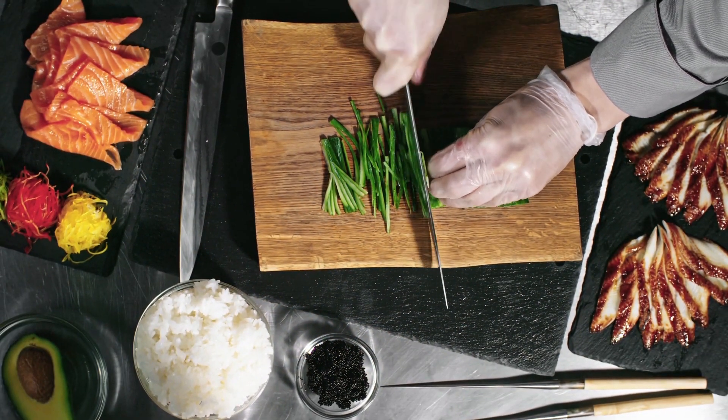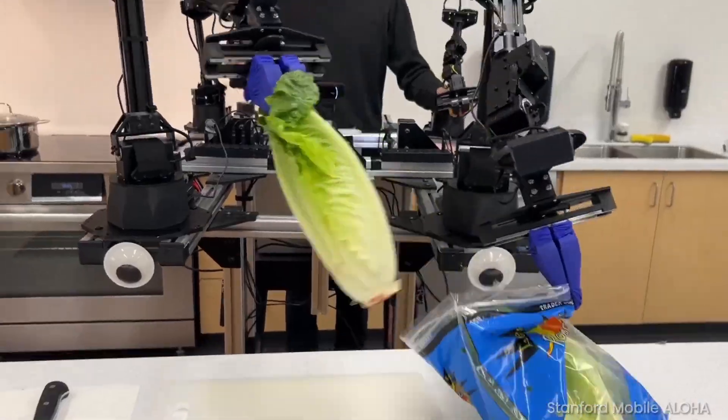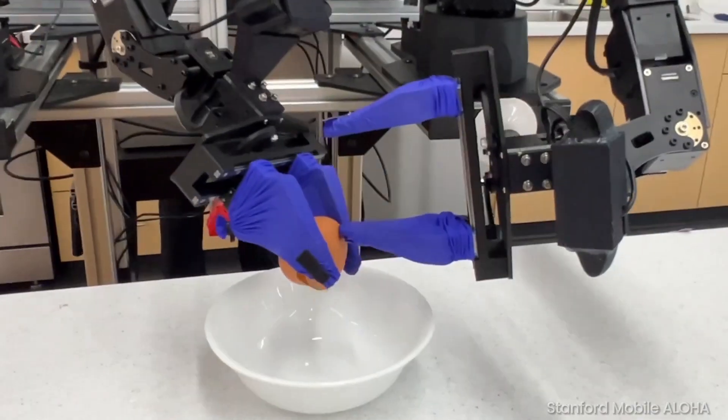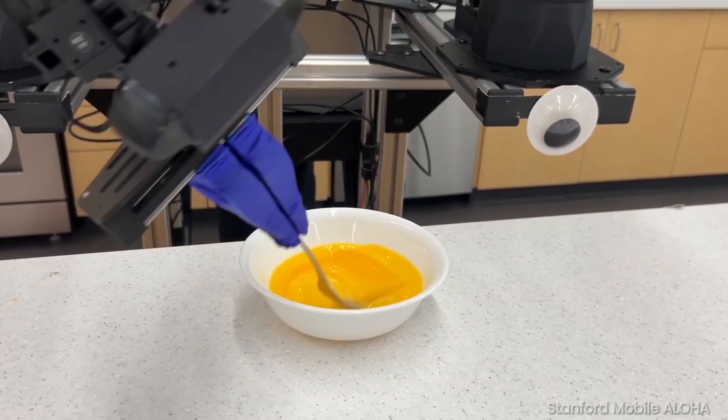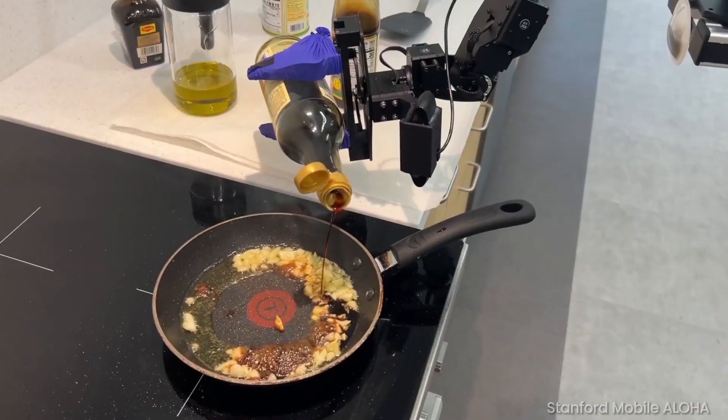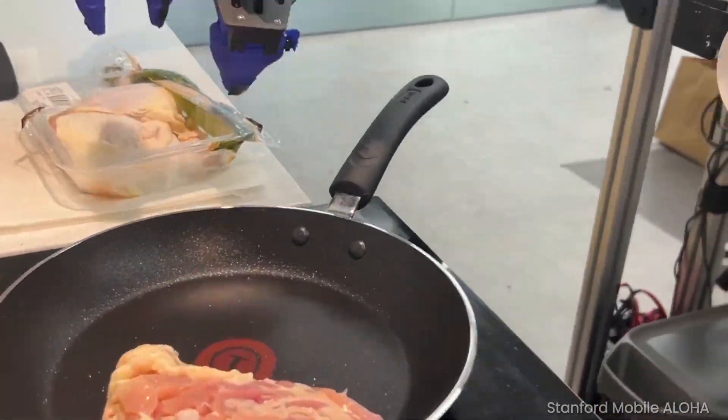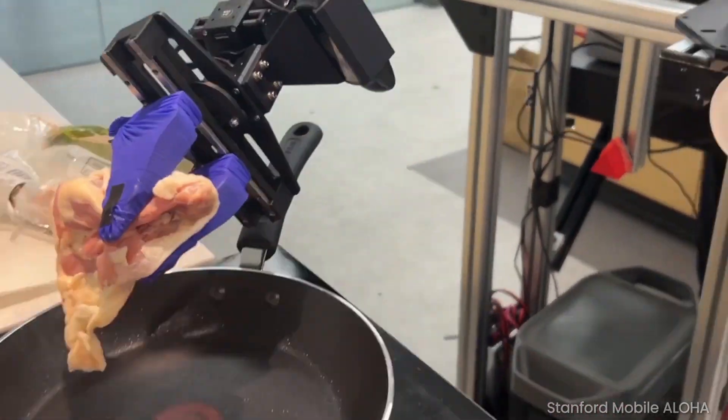If you've ever wished for an extra pair of hands in the kitchen, Google's DeepMind AI Lab might just have heard your wishes with the Google Mobile Aloha, a bi-manual mobile manipulation system, or in simpler terms, your personal robot cook.